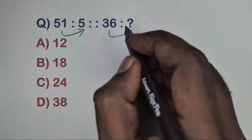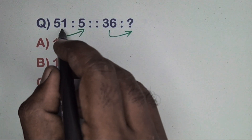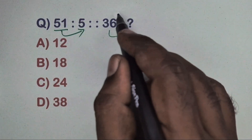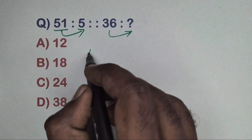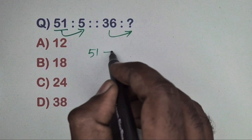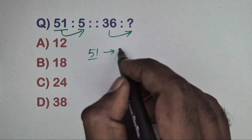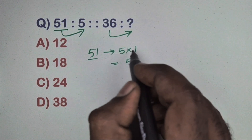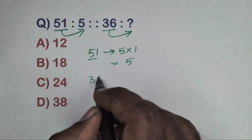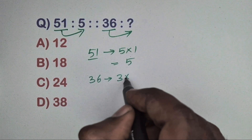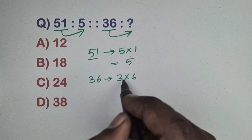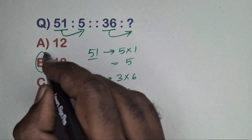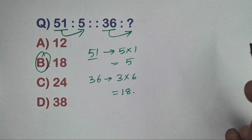Next question: 51 is related to 5 and 36 is related to which number? This is a direct question — multiply the individual digits. 5 into 1 equals 5. Same way, 3 into 6 equals 18. Option B is the correct answer.